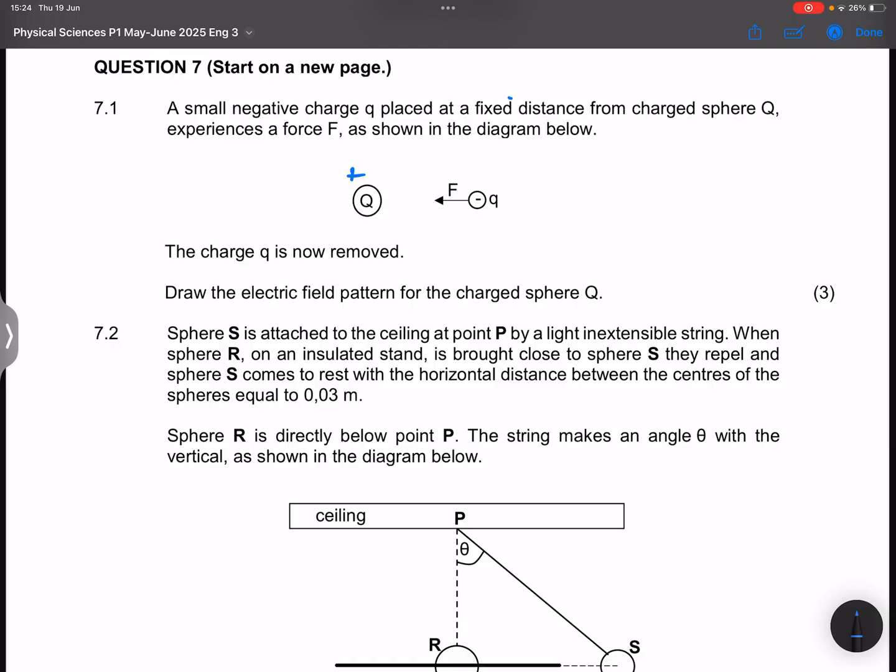They say the charge is now removed. Draw the electric field pattern for the charged sphere Q. So they wanted you to first acknowledge that Q must be positively charged, and if that is the case, remember when we draw the electric field pattern for this, our field lines should consistently be moving away from our charge because we assume a positive test charge.